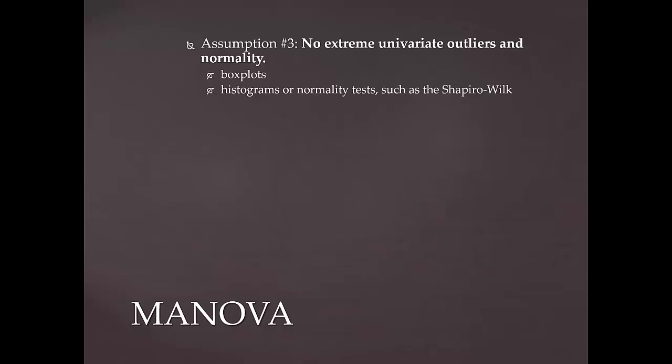You can create histograms or conduct normality tests such as Shapiro-Wilks or Kolmogorov-Smirnov tests. On histograms, normality is assumed when there is a symmetrical, bell-shaped curve. For the normality test, non-significant results — a significance level of more than 0.05 — indicates tenability of this assumption, meaning normality can be assumed. This is checked for each grouping variable and each dependent variable.